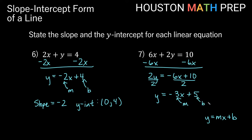So that tells us our slope is negative 3, and our y-intercept is the point (0, 5).